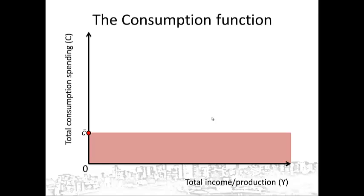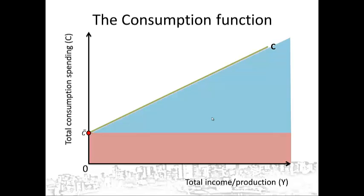The second characteristic: if income increases, total consumption will also increase. This is Joan's induced consumption — that part of consumption which increases when your income increases. The third characteristic: if income increases, total consumption will increase by less than the increase in income. This means the green line is relatively flat. For every 1 Rand in income, consumption will also increase, but by less than 1 Rand.